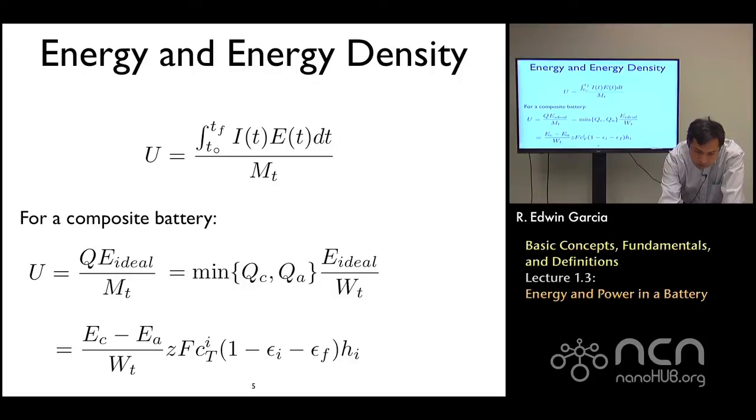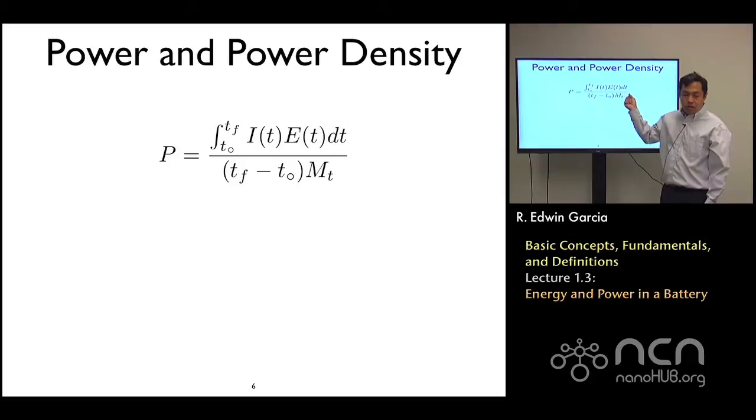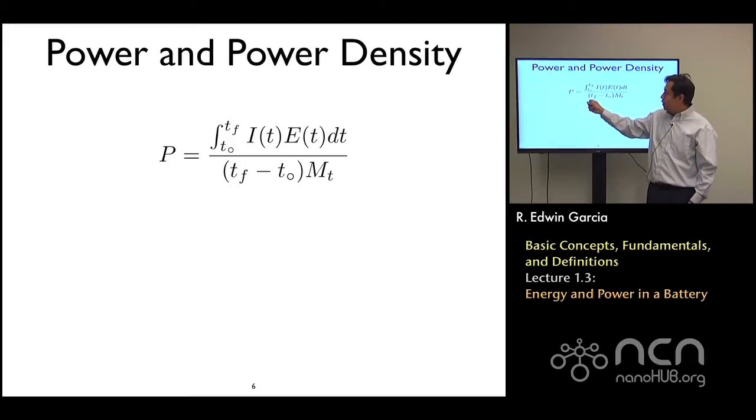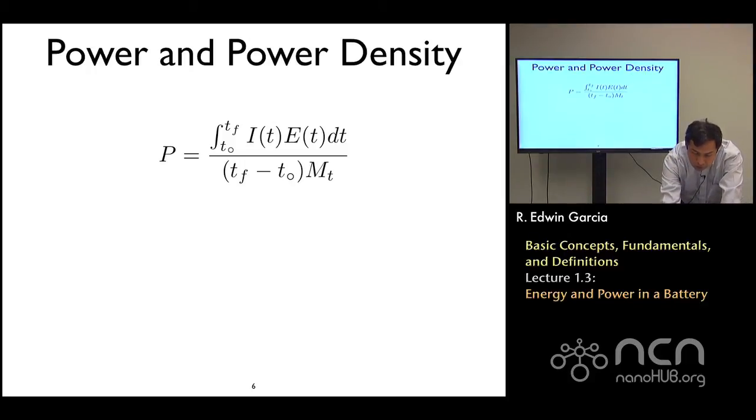To extract the power density, it's very similar to the definition we specified for energy density. We have the current times the voltage times time. Current times time gives me charge, and charge times voltage gives me energy divided by the mass gives me the energy density. If I divide it by the time in which I use that energy, that gives me the average power that the system will deliver. This quantity has to be distinguished from the power that at an instant you can get, because the power that your car has at the beginning of playing with it is not going to be the same as at the end of the discharge process, because this current is going to be varying and the voltage is going to be varying in time. That quantity only gives you the average value.